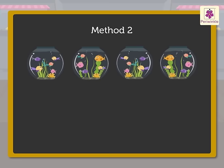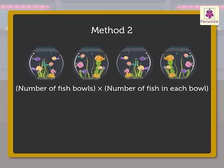Now, let us see Method 2. Here, we would be multiplying the numbers. Let us see how. There are four fish bowls. Each bowl has five fish in it. So, we multiply the number of fish bowls with the number of fish in each bowl. 4 times 5 is equal to 20.